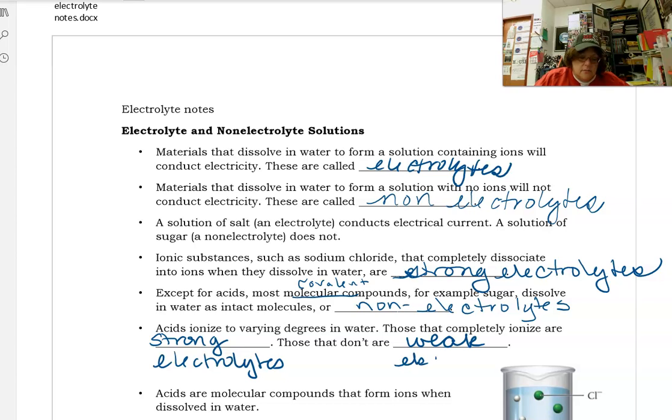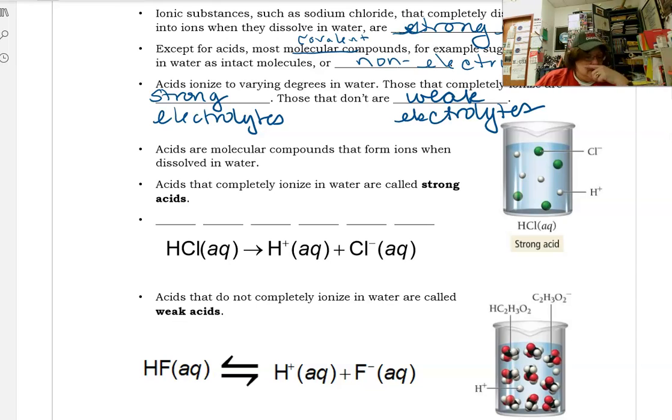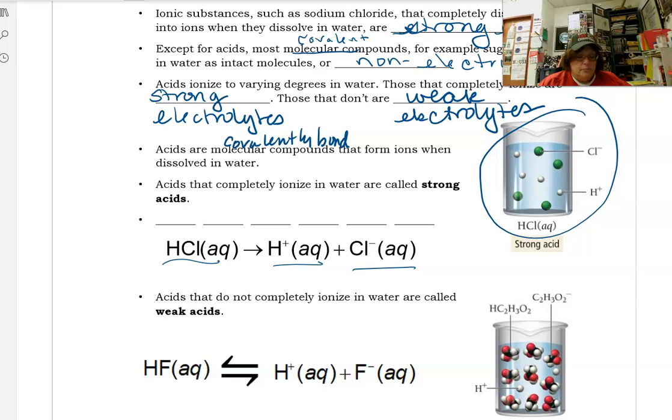Let's talk about acids. Acids are molecular compounds, they're covalently bonded. That's what molecular compound means, as opposed to a crystal. They form ions when dissolved in water. Acids that completely ionize are called strong acids. Here's a picture. If the chlorines are the green and hydrogen is the white, all of the chlorines are completely dissociating into hydrogen and chloride.